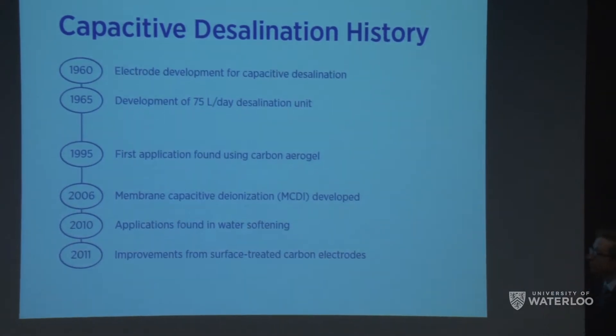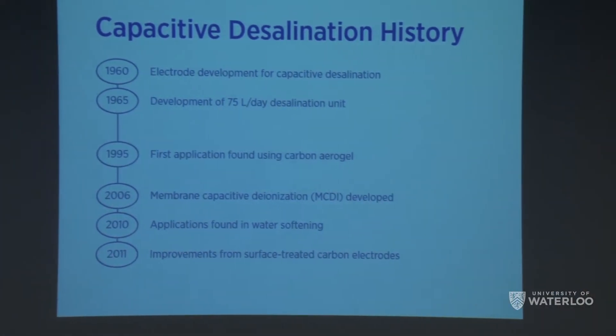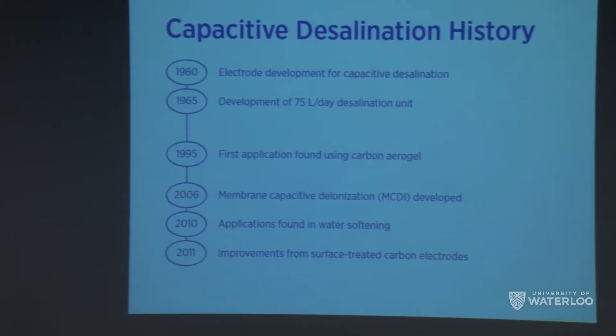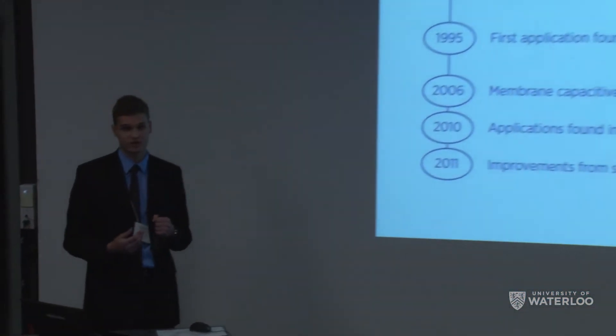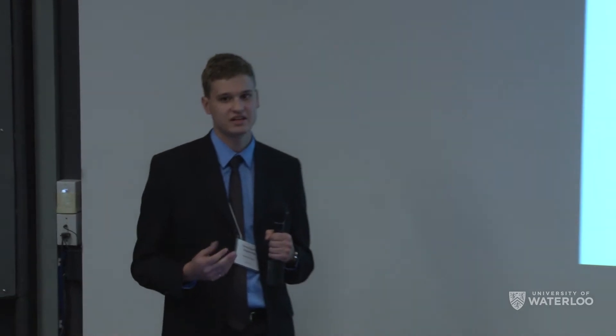These basic principles have been understood for about 50 years, when it was first conclusively shown that capacitive deionization was a method that could be used for desalination. However, the field lay fairly dormant for decades until the mid-1990s, when it experienced a renaissance and it was discovered that porous, high-surface-area carbon materials can drastically improve the properties. Since then there's been a lot of interest in the field, culminating in membrane capacitive deionization being implemented across various applications.